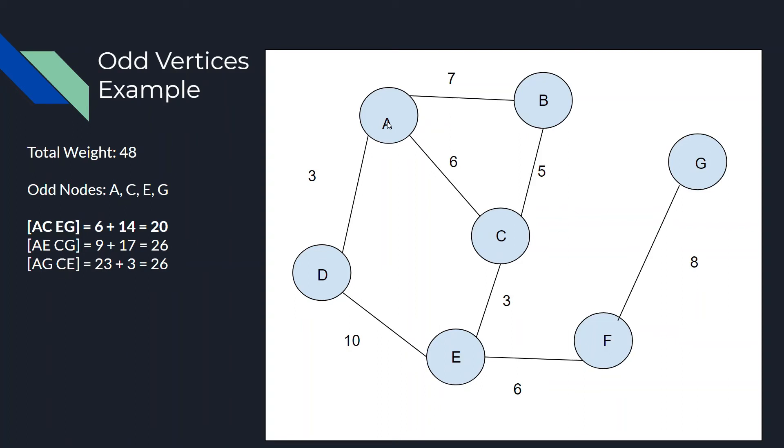We start from A. We go down to C, which is 6 plus 3. That's 9. And then we'll have C, G. So, that's 3 plus 6 plus 8. And that will be 17. And that's added together. We get 26.